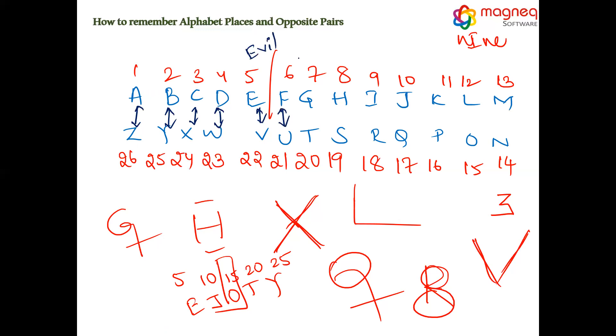F, U, for you. G, T, goat. H, S, has. I, R, inferior, race.